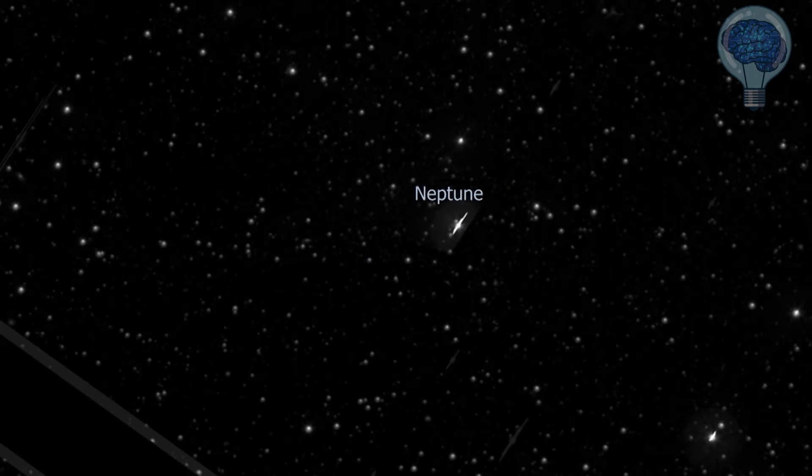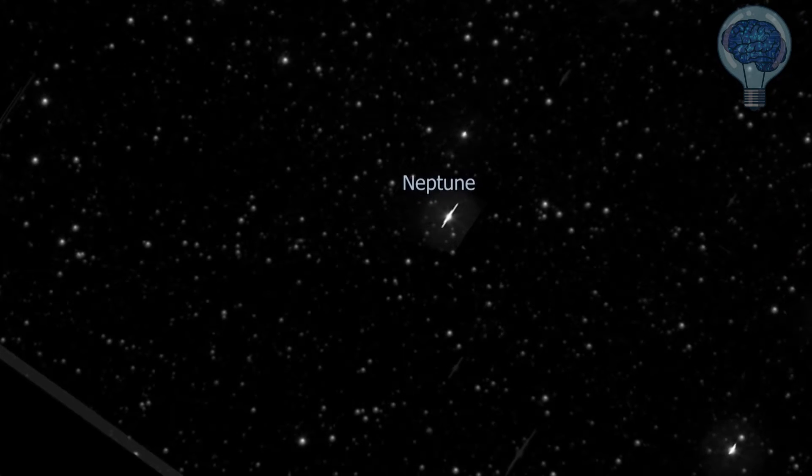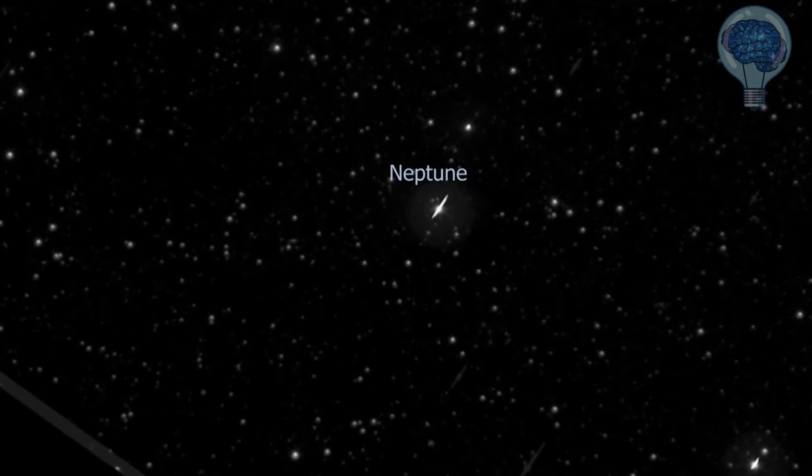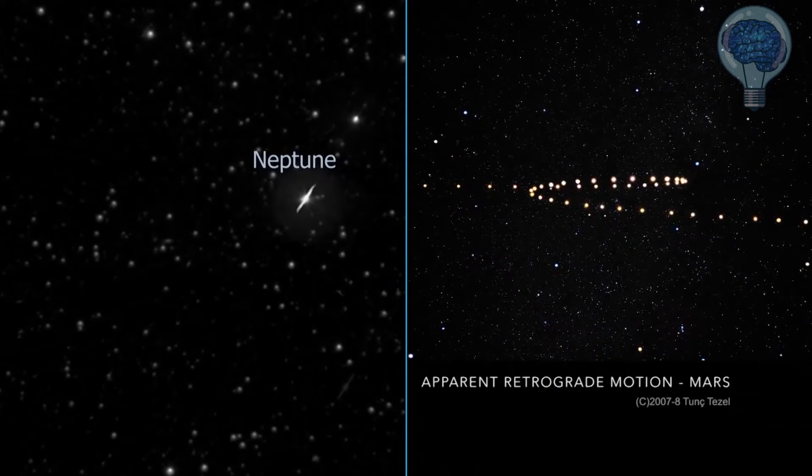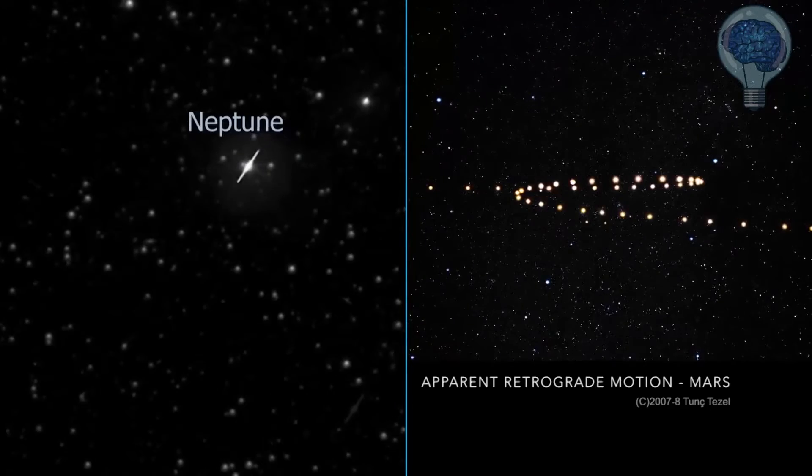About halfway through the observation, Neptune appears to stop its westward march and reverse course. In reality, Neptune always moves east, but at a slower rate than Kepler. This causes an apparent retrograde motion, or backward step, each time that the telescope laps the planet.